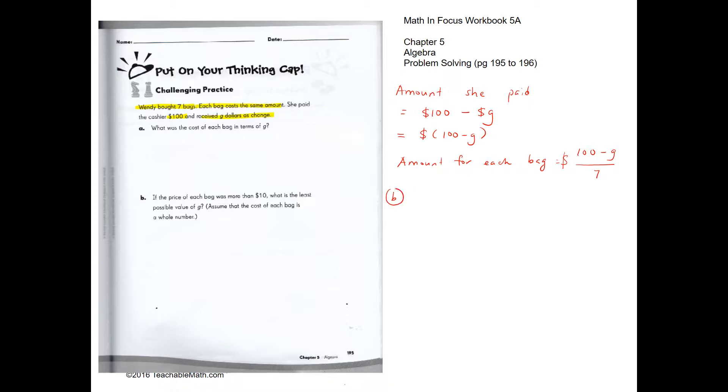So for B, if the price of each bag was more than $10, what is the least possible value of G? So in this case, we can do a few trial and errors. So if the change is $0, then that means she'll be spending $100 on the bags. But because we are buying just seven bags, this is not a whole number. So G equals to zero is not the answer.